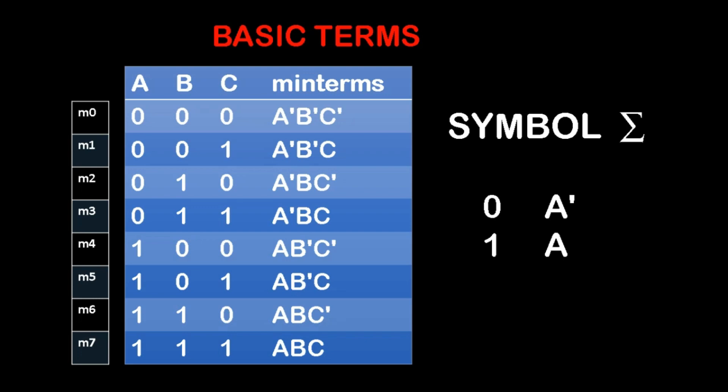I have written it like M0, M1, M2 — M indicates the min terms. I am representing each and every min term by M1, M2, M3, and so on. The symbol used for this is sigma, which represents sum of product terms. Note the basic rule: 1 indicates A (uncomplemented) and 0 indicates A dash (complemented) in sum of product terms.